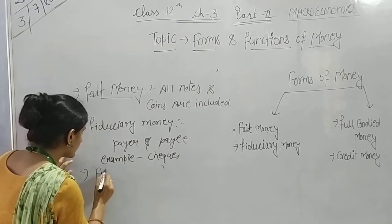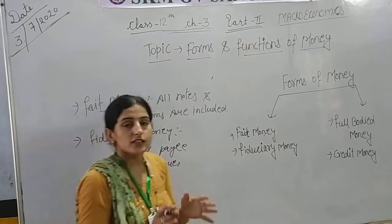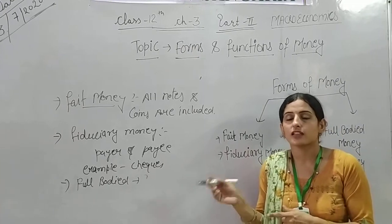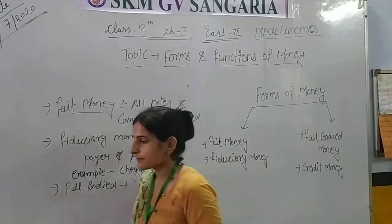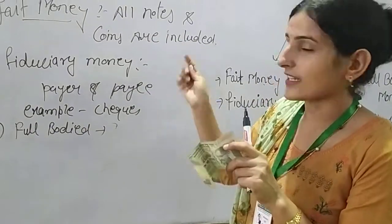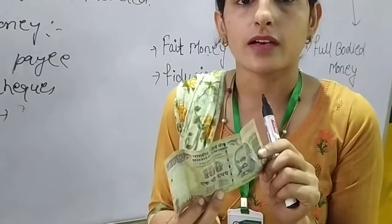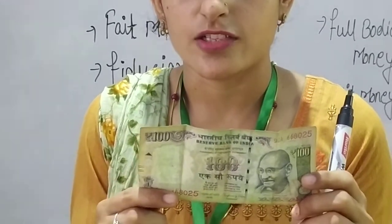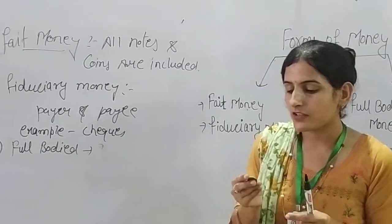The third is full-bodied money. In full-bodied money, the commodity value of money is equal to its money value — in other words, the commodity value and the face value are equal. For example, consider a paper note: it is issued by the authority and government of the country. But in full-bodied money, the commodity value and face value are equal. For example, coins — if a coin has 5 written on it.